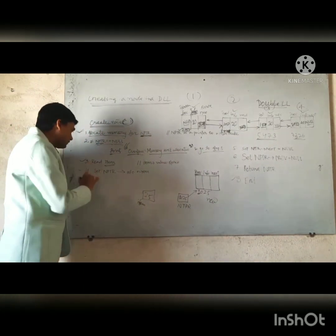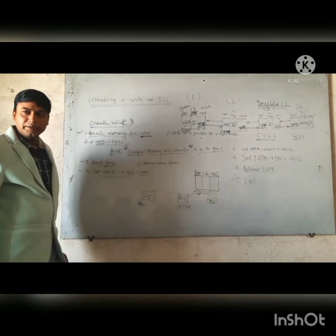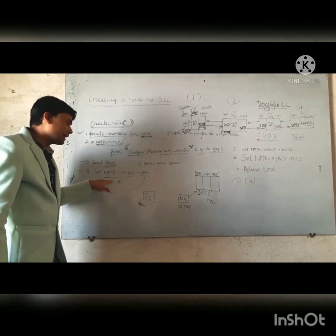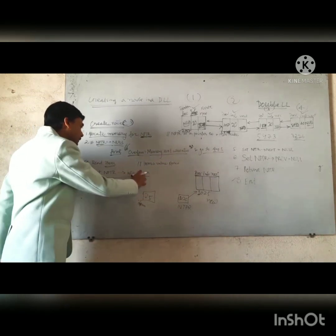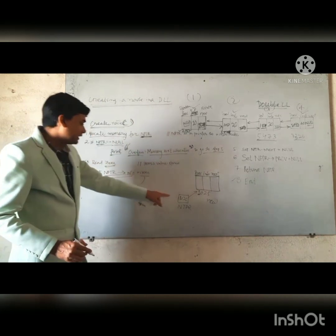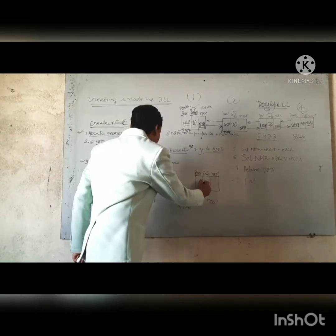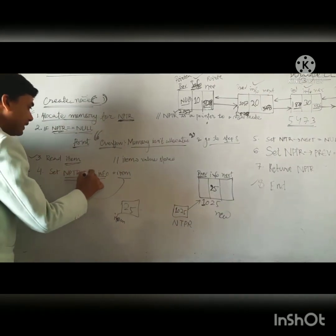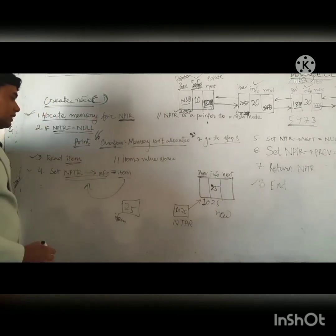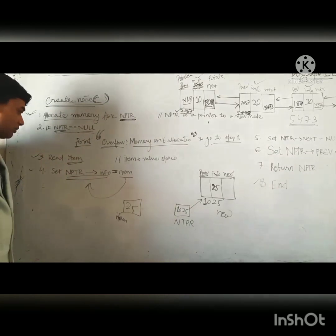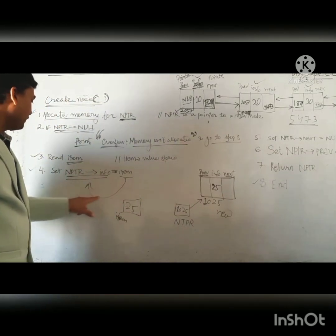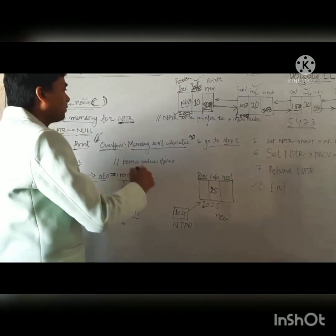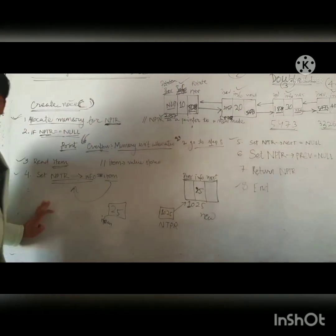Now, step four: set NPTR->info equal to item. As you know in a C program, an assignment statement always goes from right to left — the right side value will be stored in the left side. So what is item? 25. So 25 will be stored in NPTR->info. This is NPTR pointing to this node; info is the middle part. So it will be 25. Item will be stored in NPTR->info — item is 25, so 25 is stored as NPTR->info.